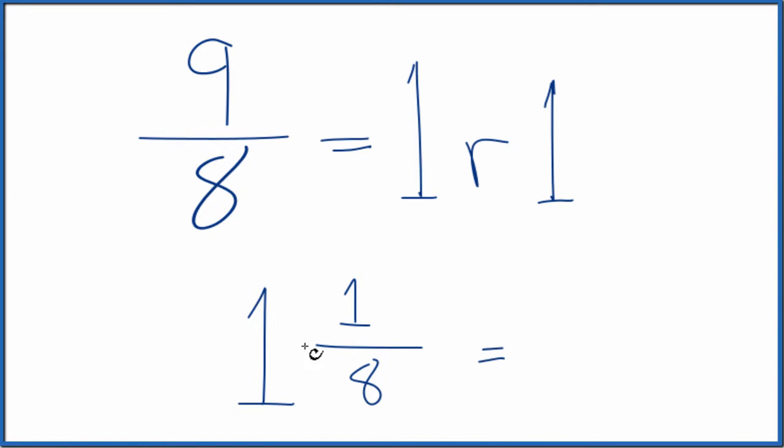And we can check that. 1 times 8 plus 1, that gives us 9. We bring the denominator across, 9 eighths. That's what we got when we started.